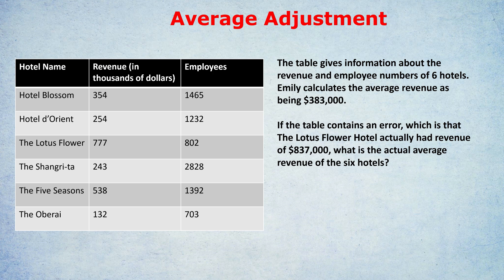If you follow along, there are three steps to saving those precious one or two minutes. Step one: calculate the error amount. We know the actual total for Lotus Flower Hotel was 837,000 — we're not going to write the zeros to save time, so 837. But in the table it was 777. If we take those two away from each other, we get an error amount of 60 — that's $60,000, but let's just call it an error of 60.